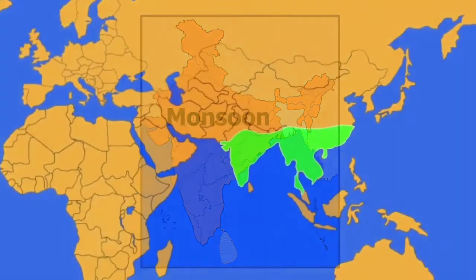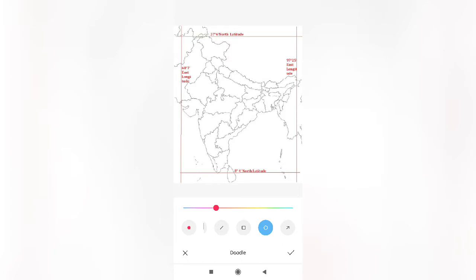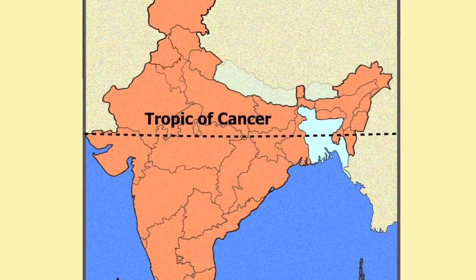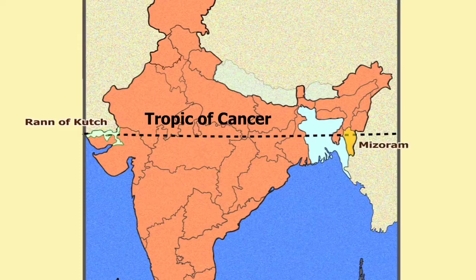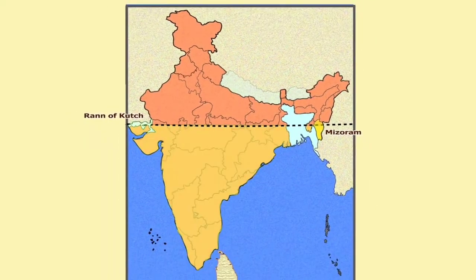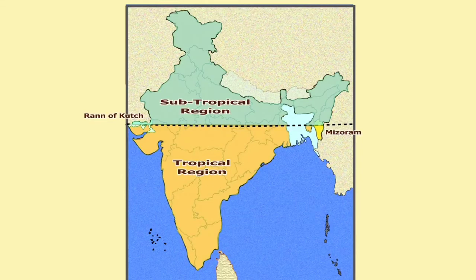This type of climate is found in South and Southeastern Asia. India extends from 8 degrees 4 minutes north to 37 degrees 6 minutes north latitude. The 23 and a half degree north, or the Tropic of Cancer, passes through the middle of the country from Rann of Kutch in the west to Mizoram in the east, dividing the country into two halves. The region below the Tropic of Cancer experiences tropical type of climate, while the area above experiences subtropical type. Hence, India's climate has the characteristics of both tropical and subtropical areas.